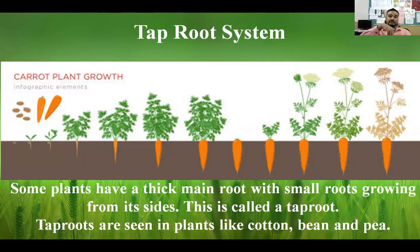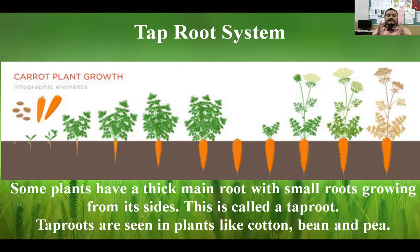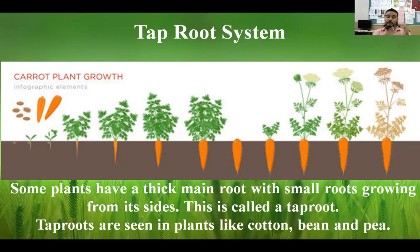The tap root system is seen in plants like carrot, cotton, bean, and pea. In the tap root system, the main root is thick and the smaller roots branch off from it.